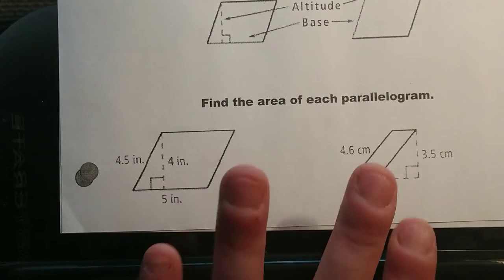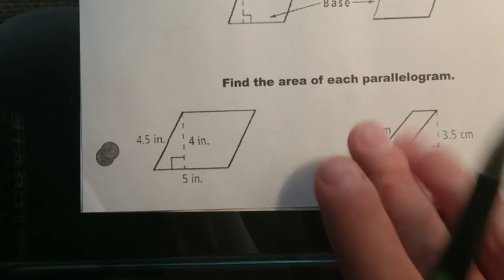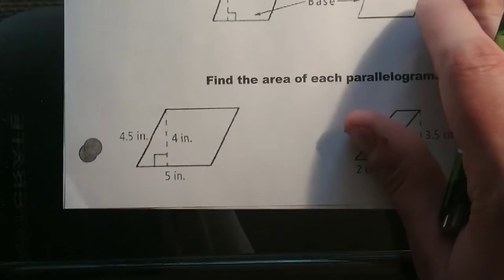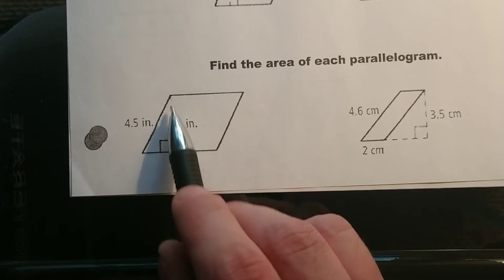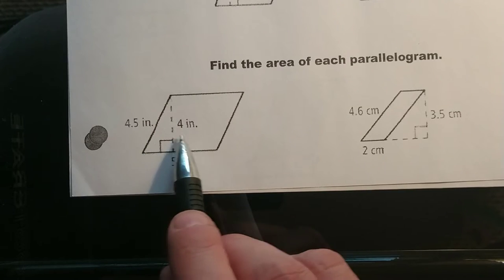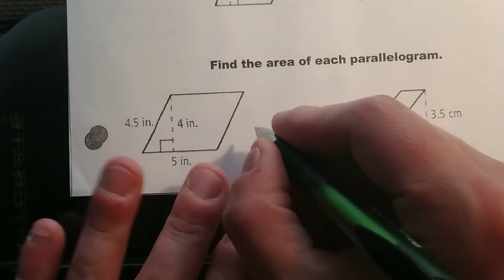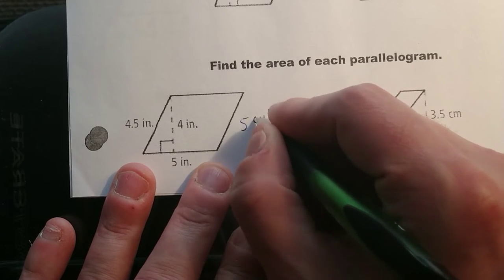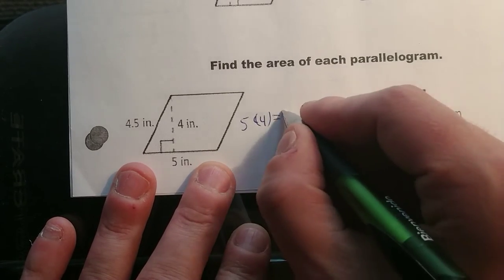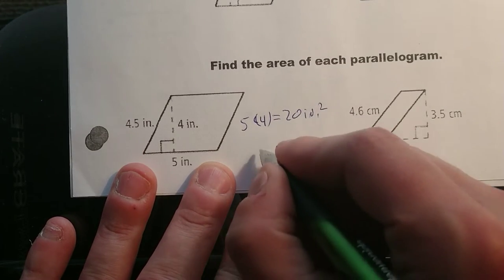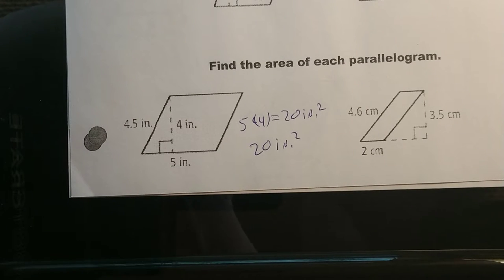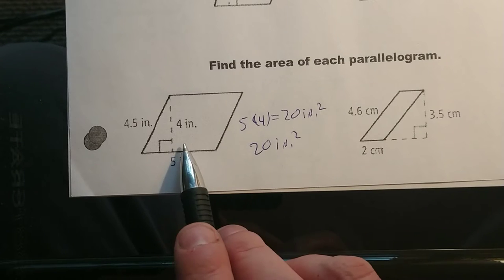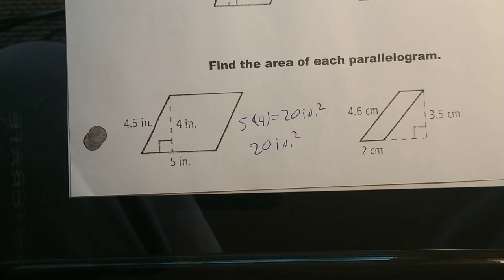Find the area of each parallelogram. We know the area of a parallelogram is base times height, so as long as we have those two pieces of criteria we'll be alright. There's our altitude perpendicular to this base, so 5 times 4 gives us our total area: 20 inches squared. Make sure you include the units — whenever you're looking for area it's always going to be squared, as opposed to a length or perimeter.